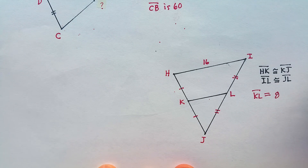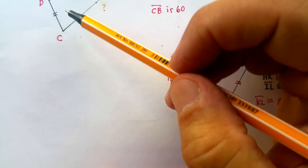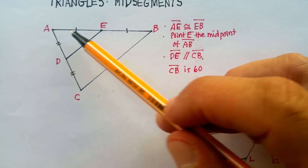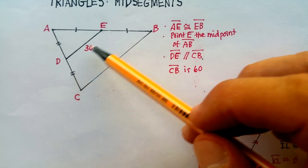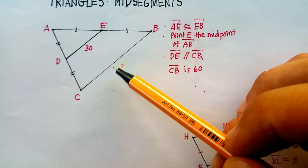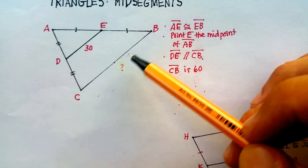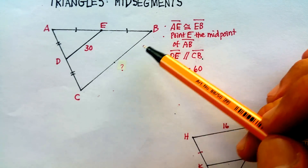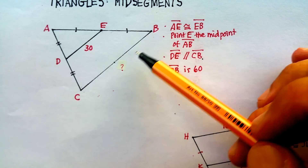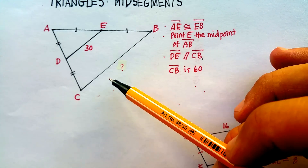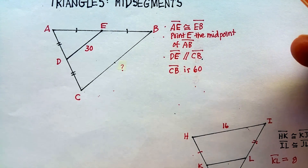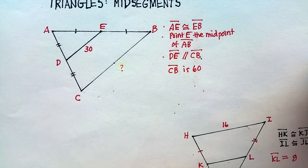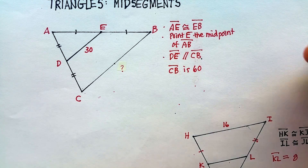I hope that was helpful. Midpoints create two equal halves, and whatever midpoints you're connecting, you can find out something about the opposite side that still does not have any mid-segment marks at all.